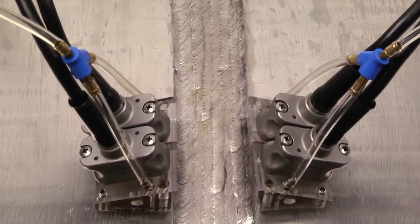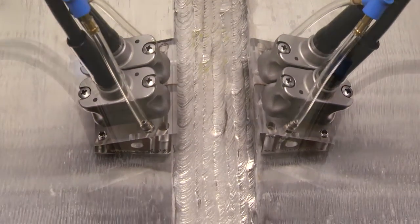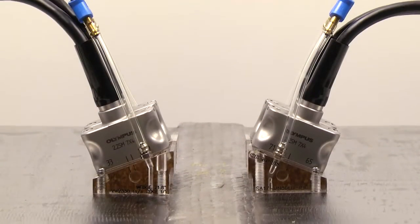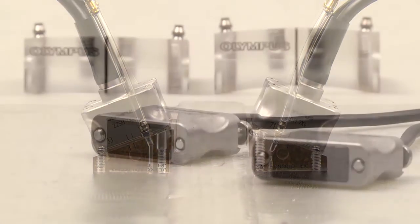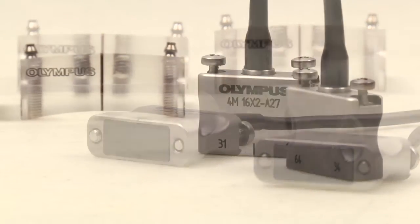Olympus Dual Matrix Array probes extend the inspection range of the OmniScan and Focus instruments for coarse-grained austenitic stainless steels and Inconel alloy materials and welds.